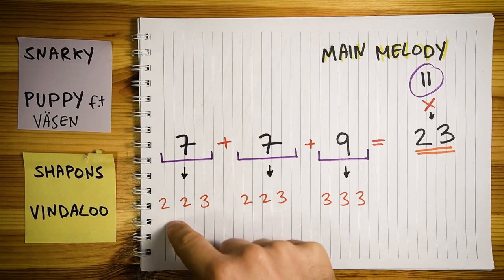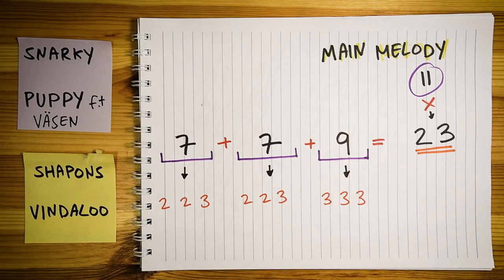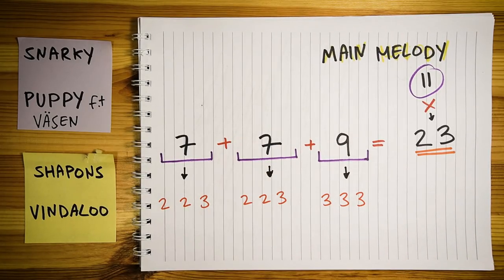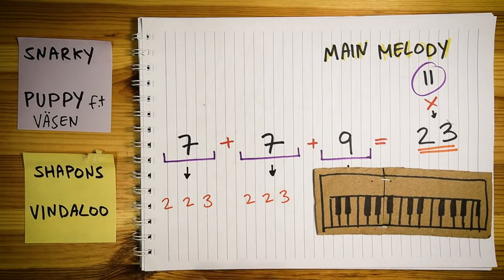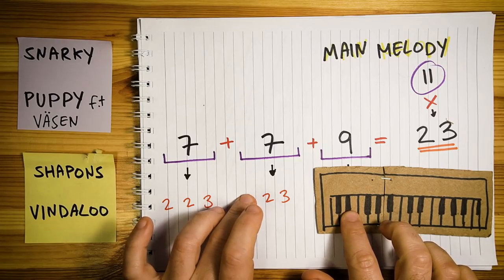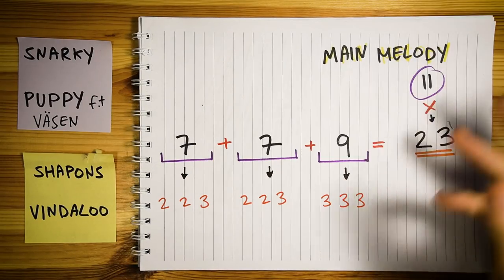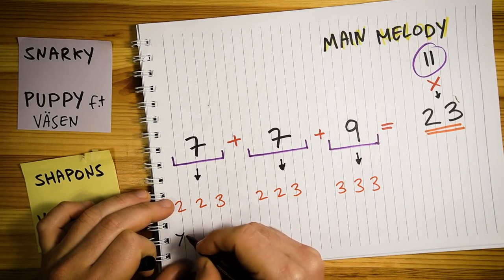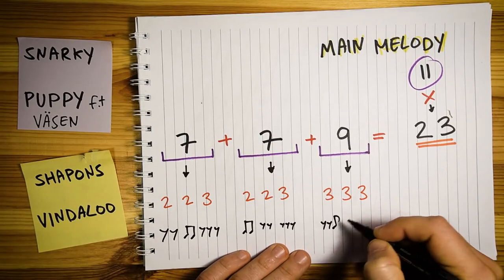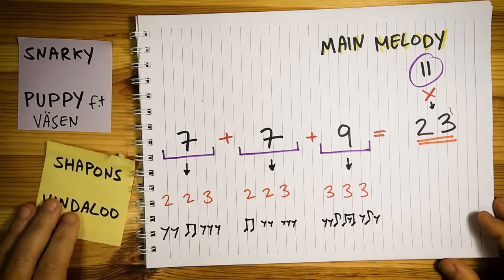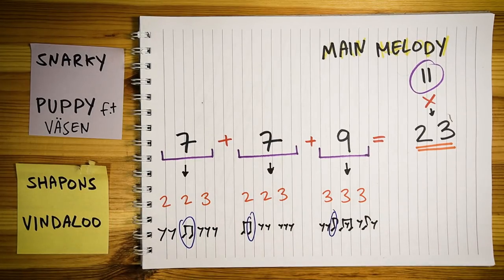This new riff slash melody skips this downbeat and this downbeat. And on this one, they have an approach note, which is arguably the weakest note you can place on a downbeat. So this note leads to this note. And because the second one is the main note, the first one is just weaker. This adds to the mismatch between the stronger notes of the melody and the stronger notes of the meter, which blurs the intricate rhythmic nature of this time signature even more.